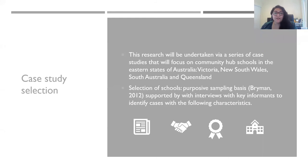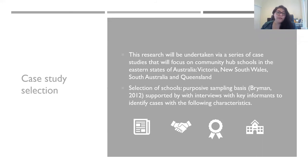Regarding case study selection, I anticipate the completion of four case studies of schools as community hubs in the eastern states of Australia: Victoria, New South Wales, South Australia, and Queensland. The selection of my cases will be based on purposive sampling, using criteria to identify schools that address my research questions. I will conduct interviews with key informants to support the selection process, helping me to identify schools with the following characteristics.